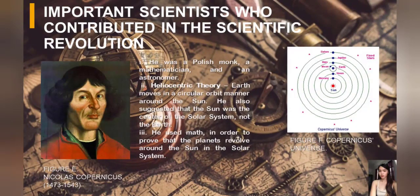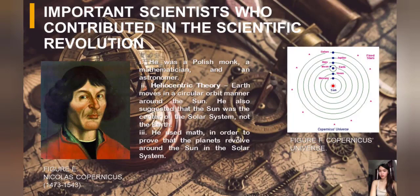Next is Nicholas Copernicus. He published the Revolution of the Heavenly Spheres, which marked the beginning of the scientific revolution. In this treatise, he presented the heliocentric theory, which rested on the revolutionary notion that the Earth orbited the sun. To further explain what heliocentric means, let's move on to the next slide.